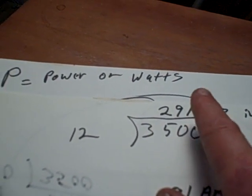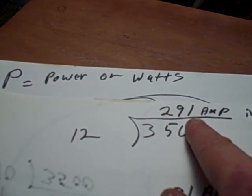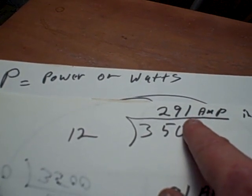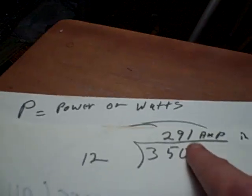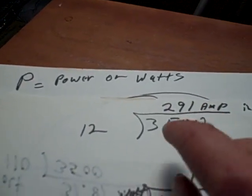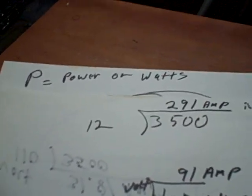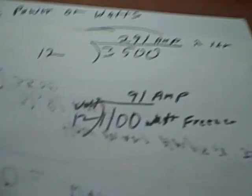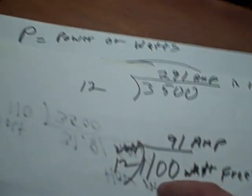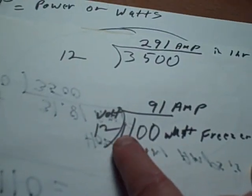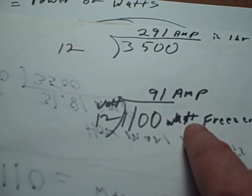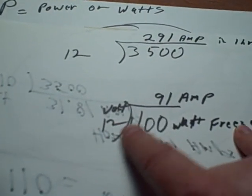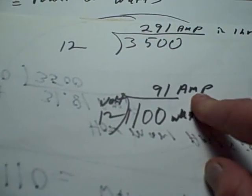So to get 3500 watt things it's going to take more than a couple of good size marine batteries. This is where you get your expenses is storing the power in the battery. This is where it gets more expensive than actually the generator itself. Now that same 1100 watt freezer at 12 volts is showing 91 ampere hours.